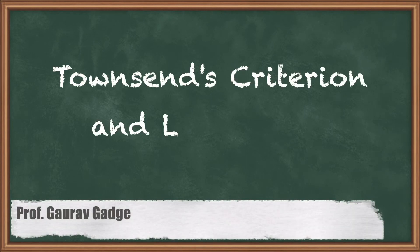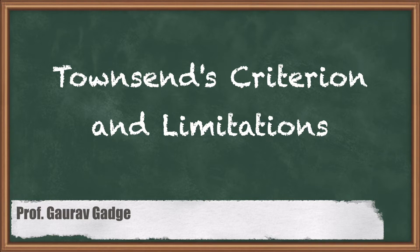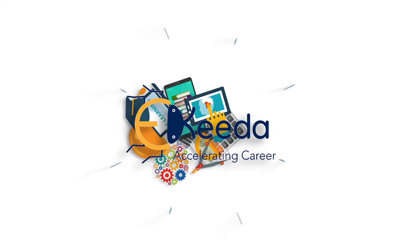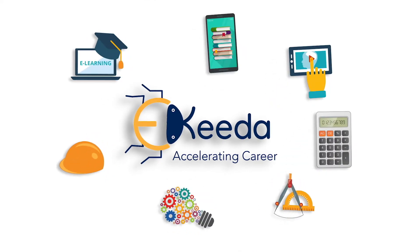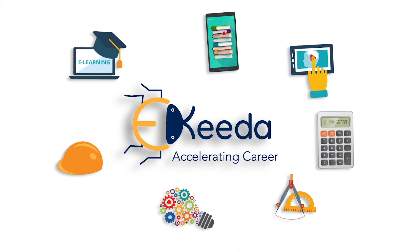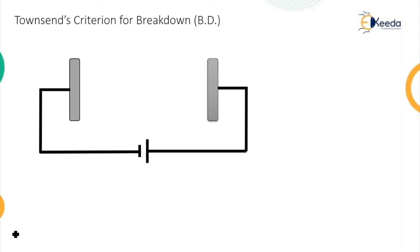Hello friends, now we are going to study the next topic that is Townsend's criteria for breakdown. The meaning of this is we have to understand the Townsend's criteria for the occurrence of breakdown in insulating material.